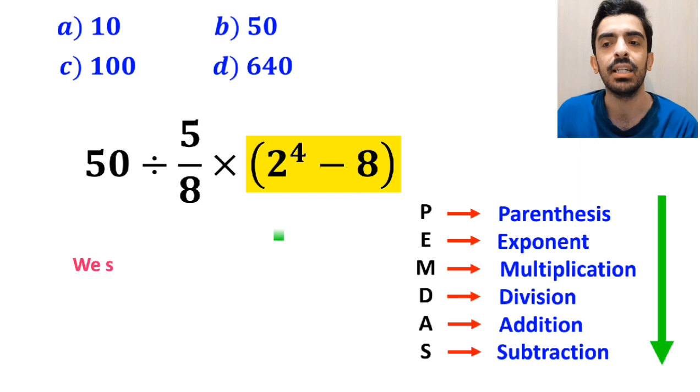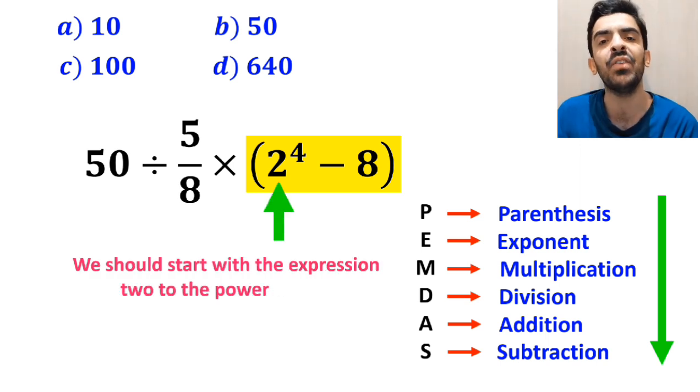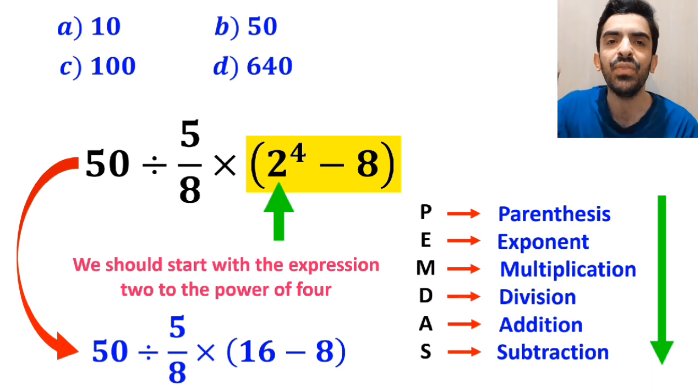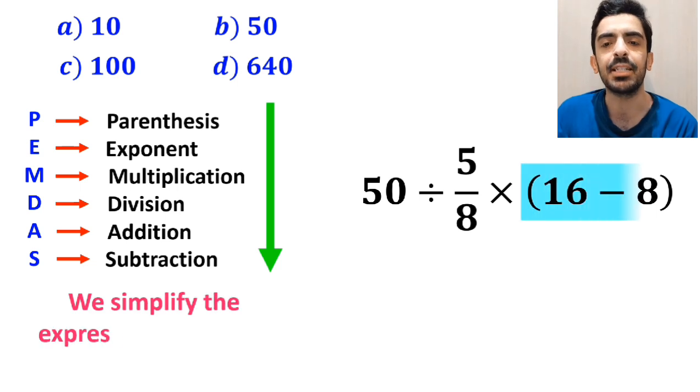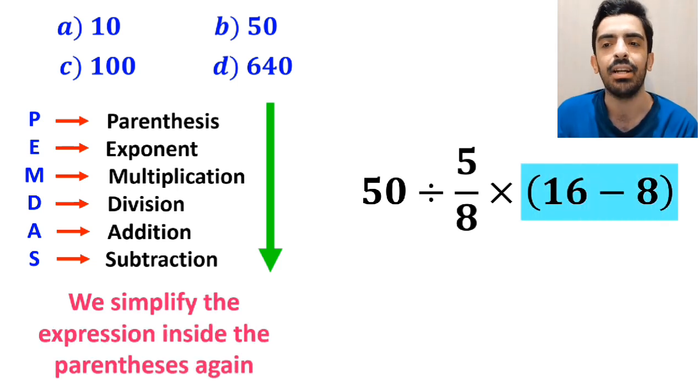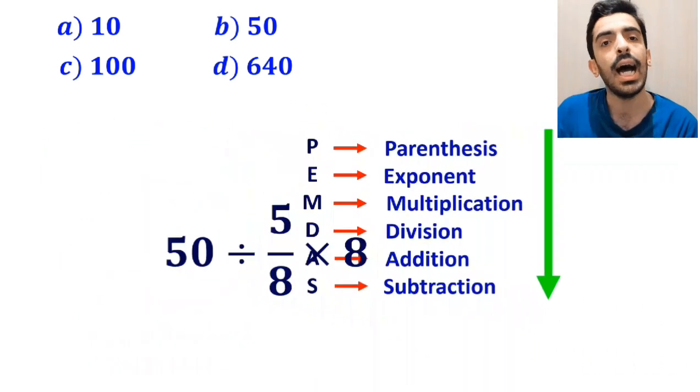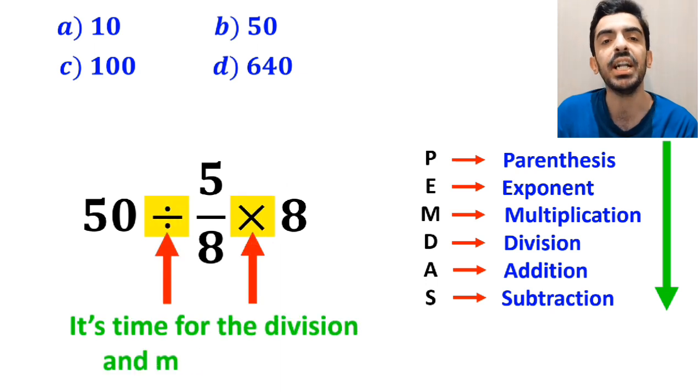Inside the parenthesis, we should start with the expression 2 to the power of 4. So instead of this expression, we can write 50 divided by 5 over 8 times 16 minus 8 inside the parenthesis. In the next step, we simplify the expression inside the parenthesis again and instead of this expression we can write 50 divided by 5 over 8 times 8. Now it's time for the division and multiplication.